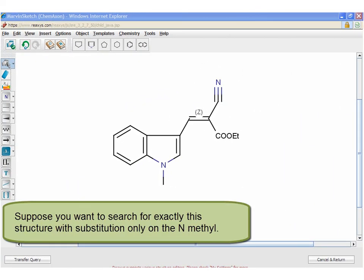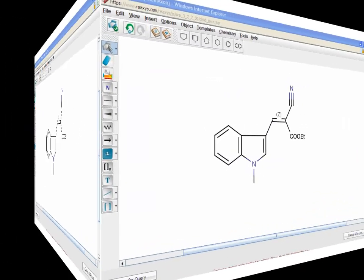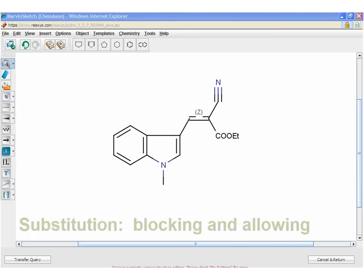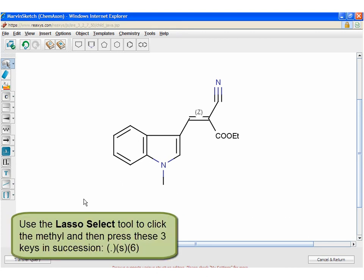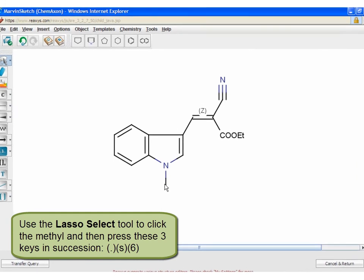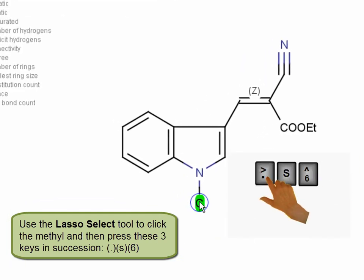Suppose you want to search for exactly this structure with substitution only on the N-methyl. Allowing and Blocking Substitution. Use the Lasso Select Tool to click the methyl, and then press these three keys: period, S6.